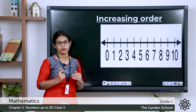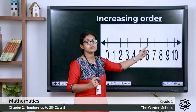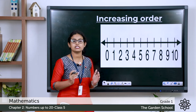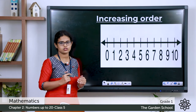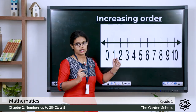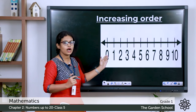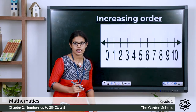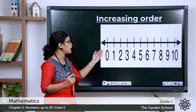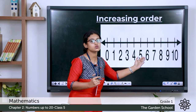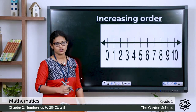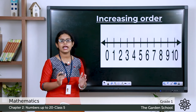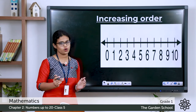You can see this is a number line with numbers from 0 to 10. This is increasing order — from 0 to 10. Zero is smaller than 1, 1 is smaller than 2, 2 is smaller than 3, and it goes till number 10. It starts with the smaller number 0 and ends with the larger number 10. So when we do forward counting, it is always in increasing order or ascending order.